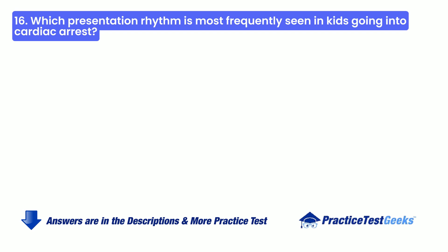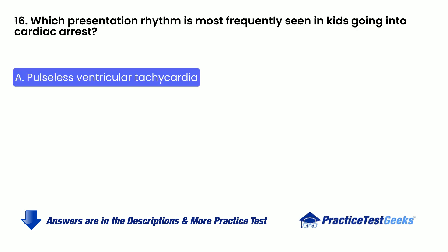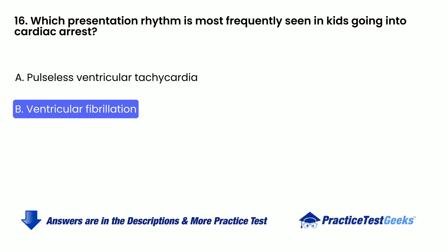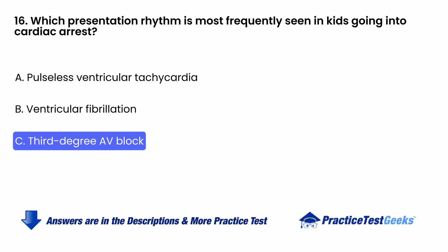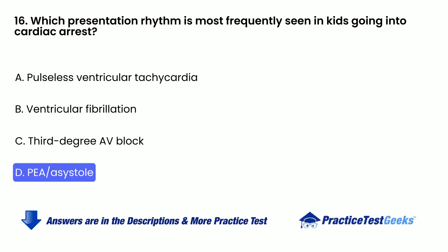Which presentation rhythm is most frequently seen in kids going into cardiac arrest? A. Pulseless ventricular tachycardia. B. Ventricular fibrillation. C. Third-degree AV block. D. PEA/Asystole.